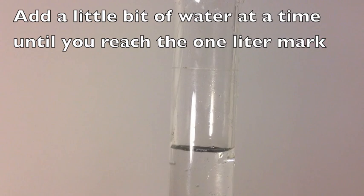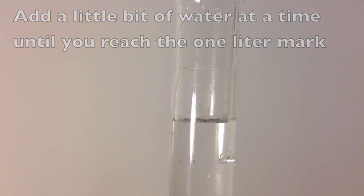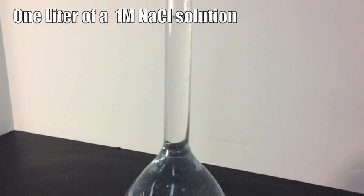And then use a squirt bottle or a pipette or a small graduated cylinder and just add a little bit of water at a time. And then as soon as you hit that line, you're done. You now have one liter of a one molar salt solution.